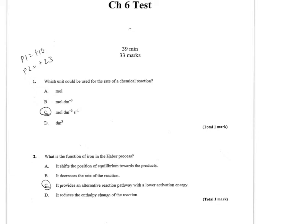Number 1 wants to know which unit could be used for the rate of a chemical reaction. This should be quick to answer because rate is change in concentration over time. A unit for concentration would be moles per decimeter cubed, but you also need the per time. So the only one that fits this criteria is C.